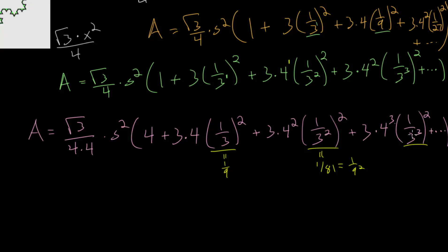Here we have 1 over 27, since 3 cubed is 27, and we're squaring that and this is 1 over 729, which is really just 1 over 9 to the third power.